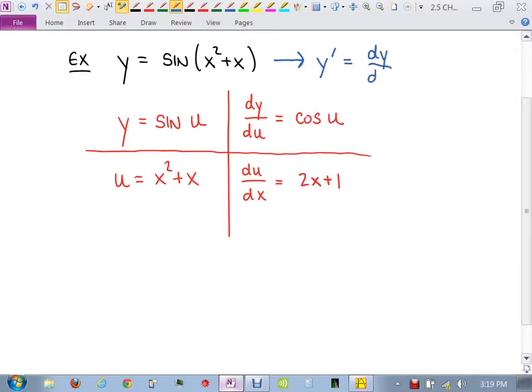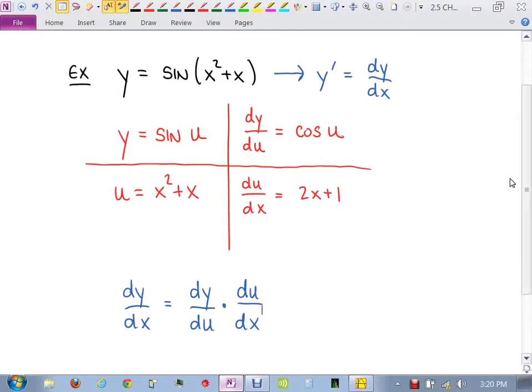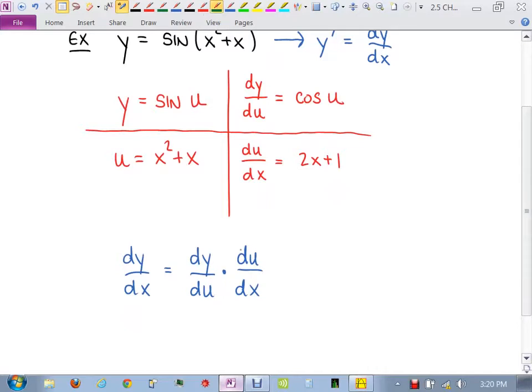But do you agree that's the same as me saying dy dx? That's what I want. Now, I don't know what dy dx is right now. I know what dy du is, and I know what du dx is. But does it make sense that dy dx, which is what I want, that that would be equal to dy du times du dx? Does it make sense to you that that would be true? Why? Yeah, it's like the du's would cancel each other out, wouldn't they? And you get dy dx? So I'm not canceling anything, right? That was just cosine u times what was du dx? 2x plus 1. And I'll put it in parentheses, right?